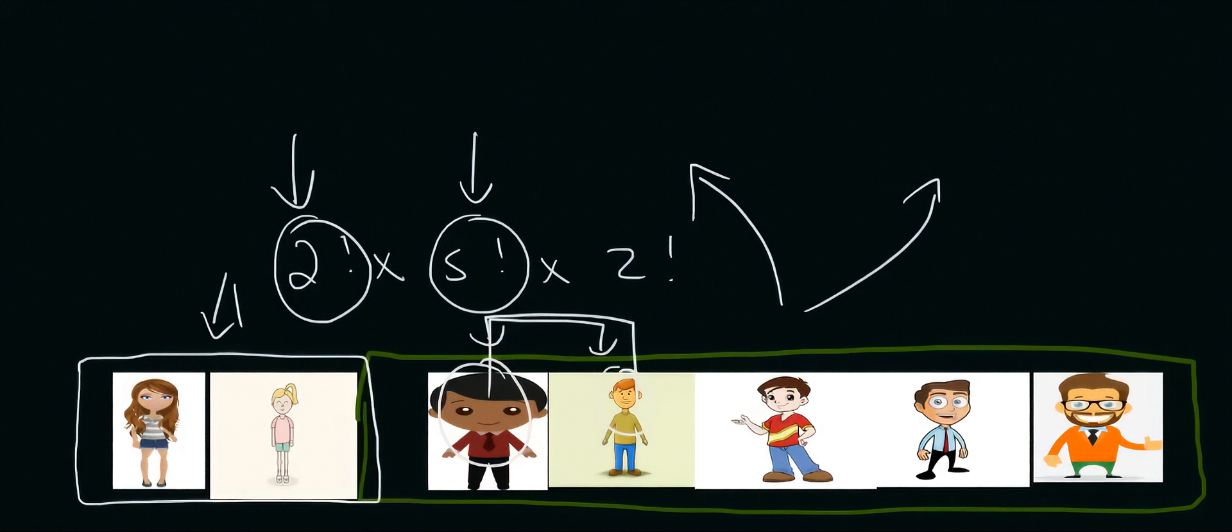And then, within the girls, they could also be seated the way we see them now, or they could be switched the other way around. And that's where the 2 factorial comes from. So, this 2 over here, is the number of categories, or units. And then, within each category, you can change the order. And that's where the 5 comes from, for the boys, and the 2 comes from, for the girls.